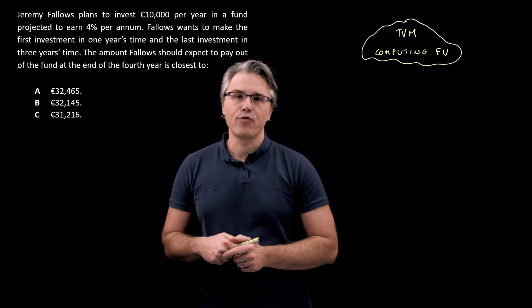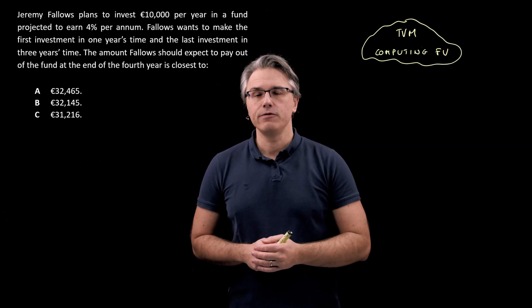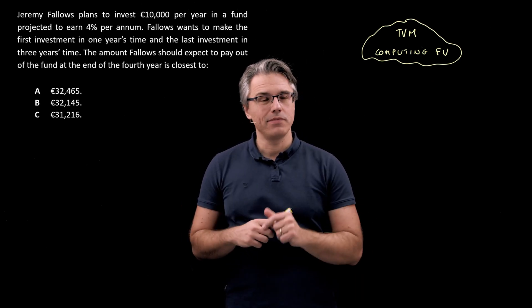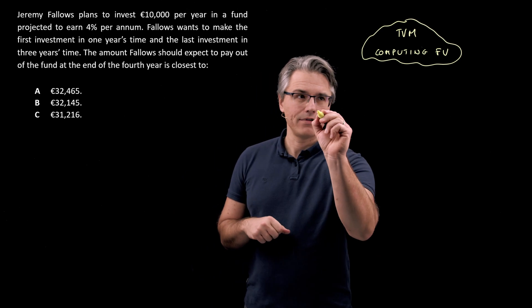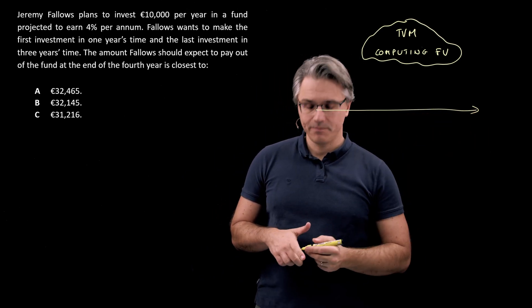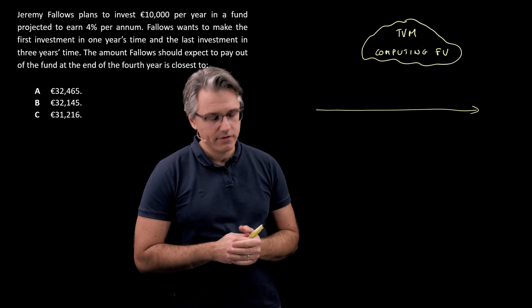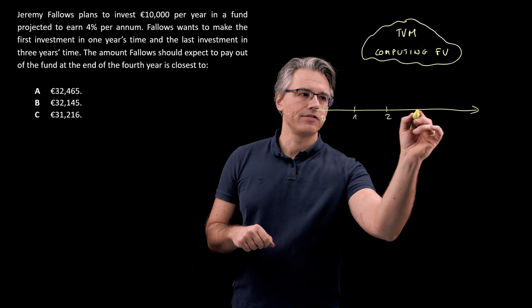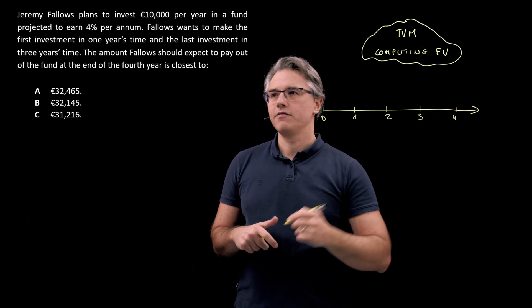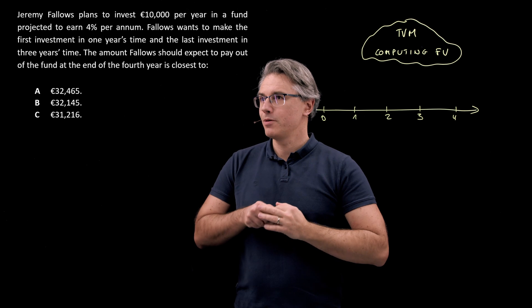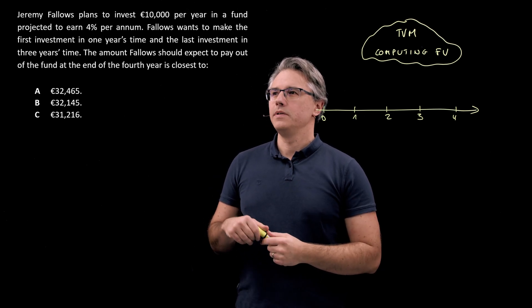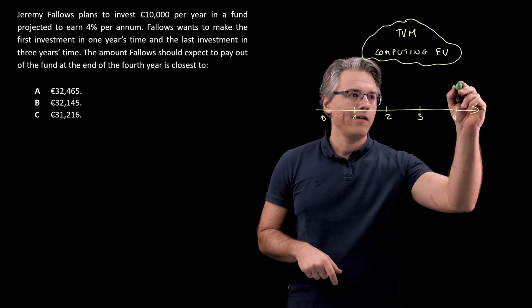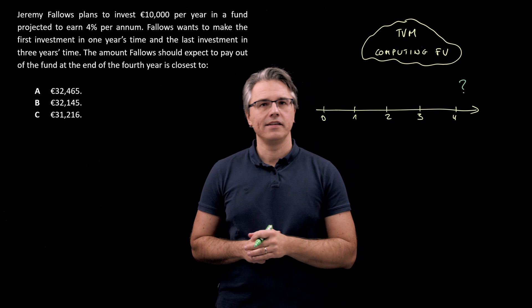Now this is naturally a problem of finding FV future value. However using the time value of money worksheet you're going to have to play around and think about how to do it logically so as to get the inputs right. So I'm drawing my timeline over here. Time zero, end of year one, end of year two, end of year three and this is end of year four where Jeremy Fallows wants to be paying out a certain amount in the future and that's what we're looking for. How much will he have in the account at the end of year four?